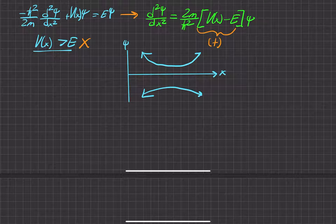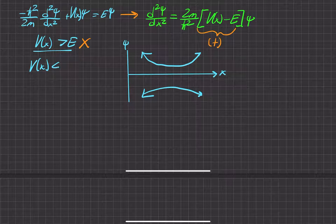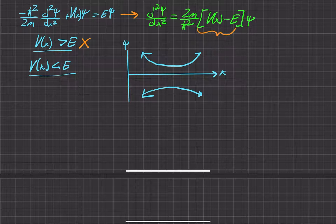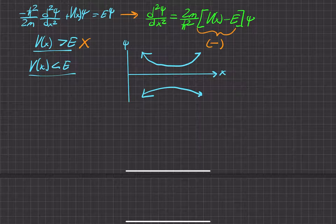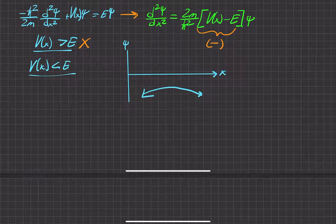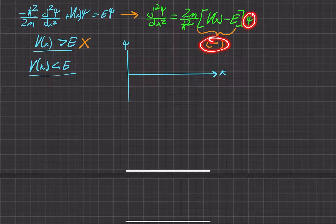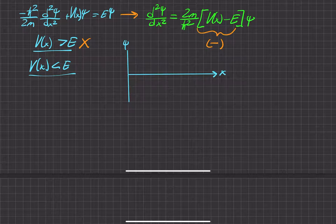If we have a different relationship where the energy is actually greater than the potential, that means this term will actually be negative. So if this term is negative and we have a positive wave function, that means the curvature is going to be negative — the wave function curves back toward the axis. Already looking good.